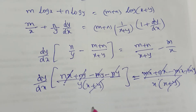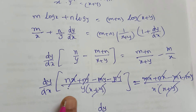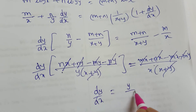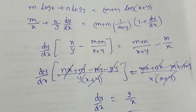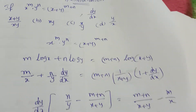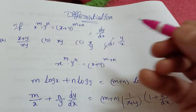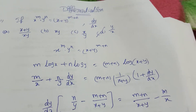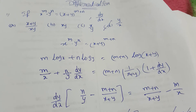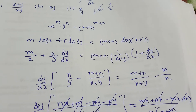Now tell me the value — dy by dx. Here 1 by y will come up. Then Y by X. What is the answer? Y by X. So which option? D option. Powers are there, then take the approach of log, then do derivative — you will get the value easily.